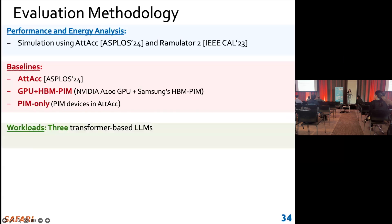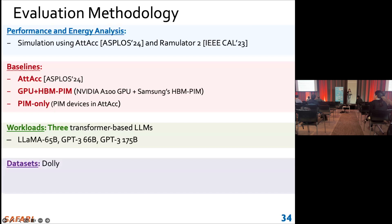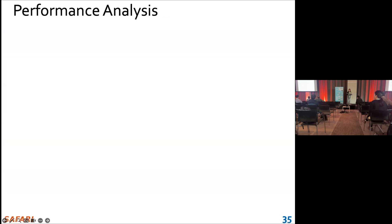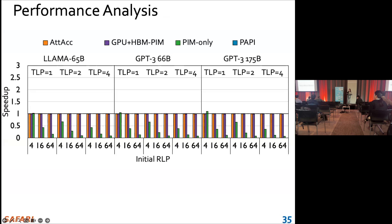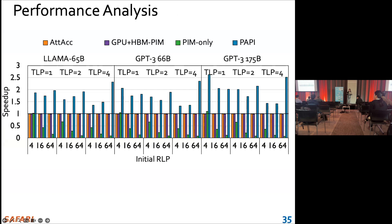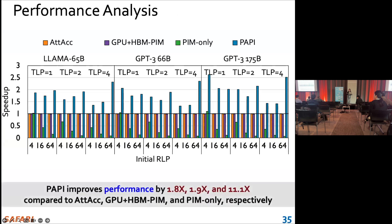We evaluate all of these with three workloads, which are popular transformer-based LLMs, and we use a Dolly dataset with two different tasks. Here are the performance results. On average, PAPI provides 1.8 times, 1.9 times, and 11.1 times speedup compared to the three baselines.